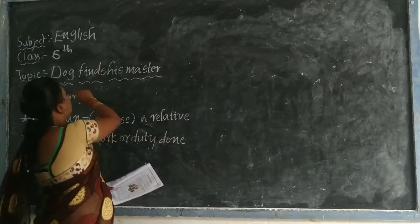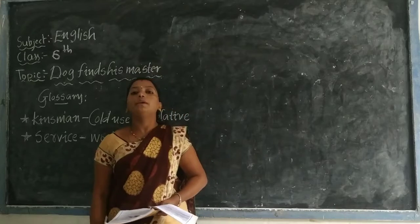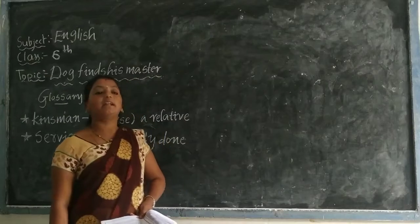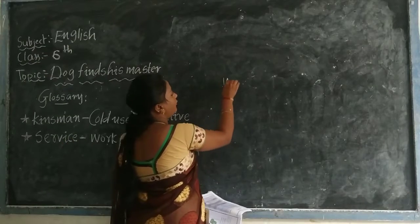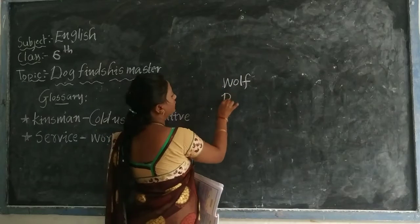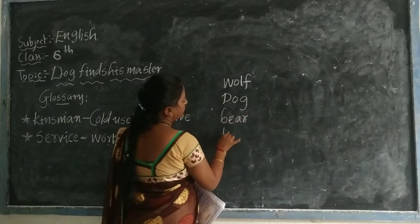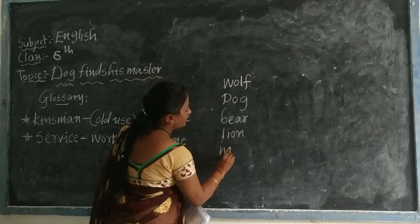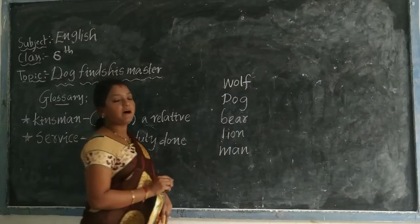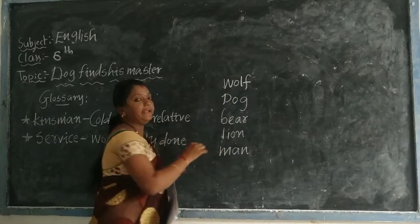In the last class we learned about 'Dog Finds His Master.' In this story, at the beginning we meet a few animals. First, wolf, then dog, bear, lion, and finally man. These are the characters in the story of 'Dog Finds His Master': wolf, dog, bear, lion, and the man.